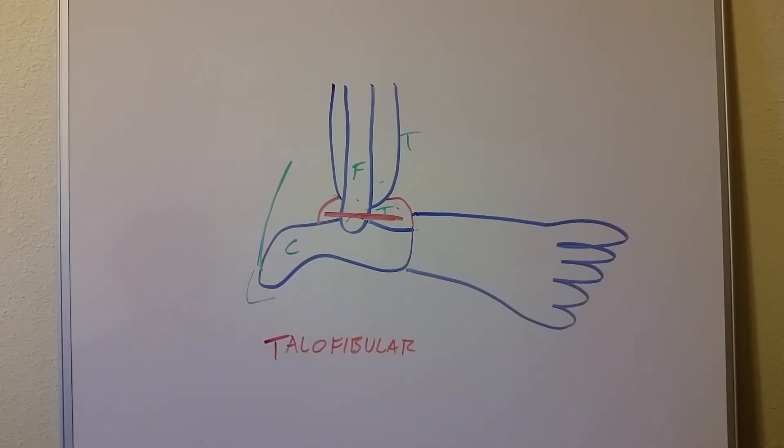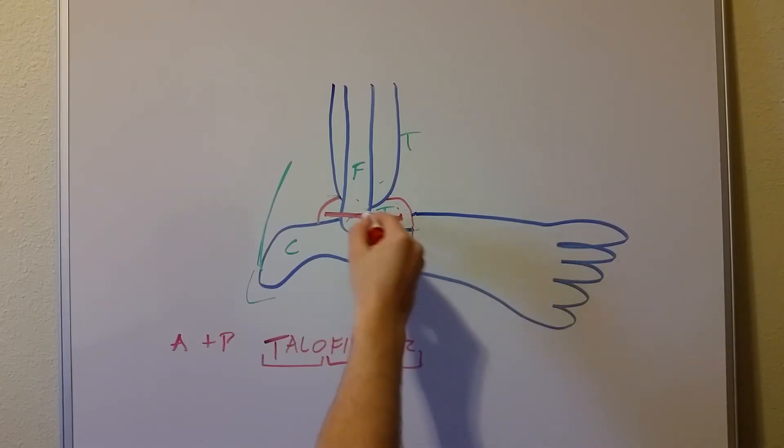Now just think about that name. What does it say? Well, it goes from the talus, this bone here, the connection between the tibia and the foot and the fibula, this bone here. You have an anterior and a posterior talofibular ligament. One here and the other one from there posteriorly.